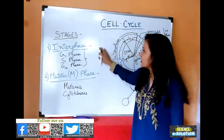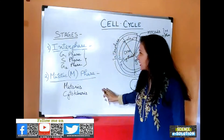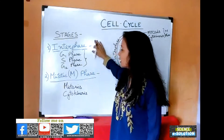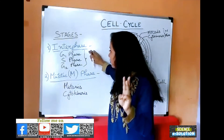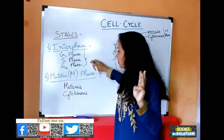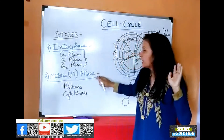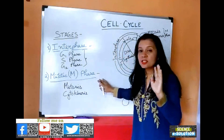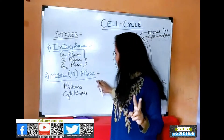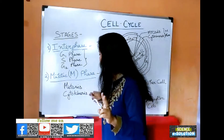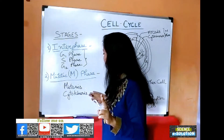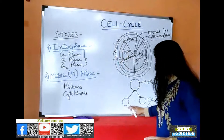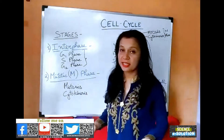So these are the stages of the cell cycle. First is interphase, which consists of three main phases: G1 phase, S phase, and G2 phase. The second phase is the mitotic phase, which has two parts — mitosis and cytokinesis. In this way, one mother cell divides to form two daughter cells.